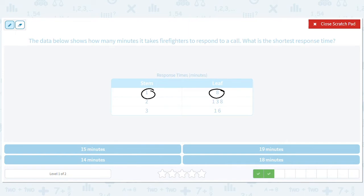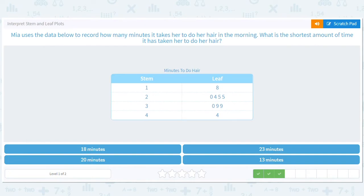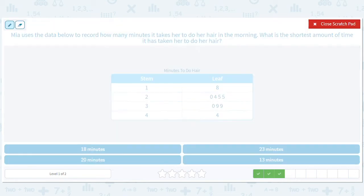Maya uses the data below to record how many minutes it takes her to do her hair in the morning. What is the shortest amount of time it has taken her to do her hair? Okay, so stem of one, leaf of eight, right? So 18 minutes. I wish it could take me 18 minutes to do my hair, just don't have enough hair left.